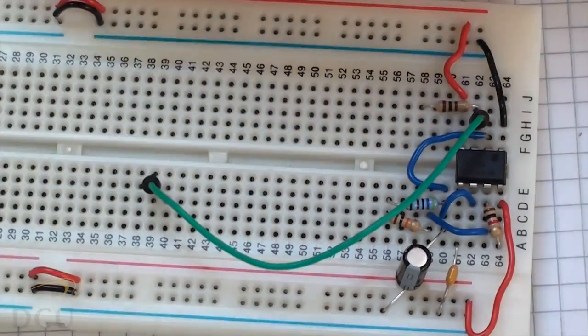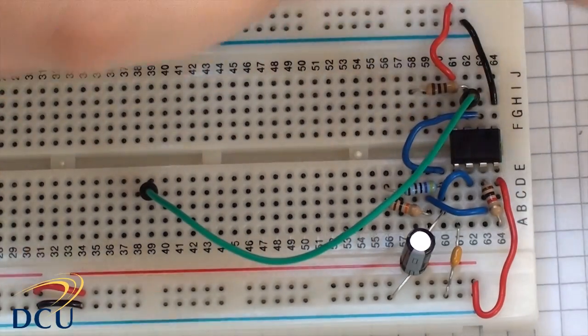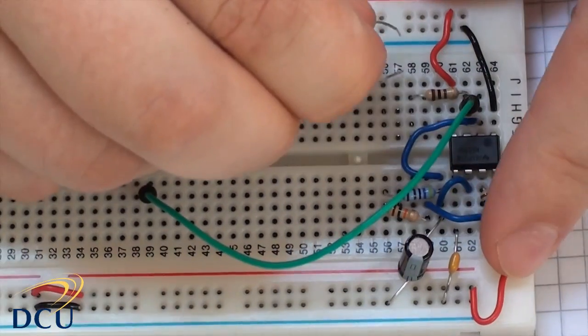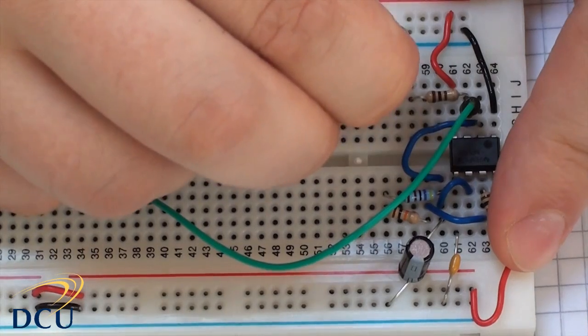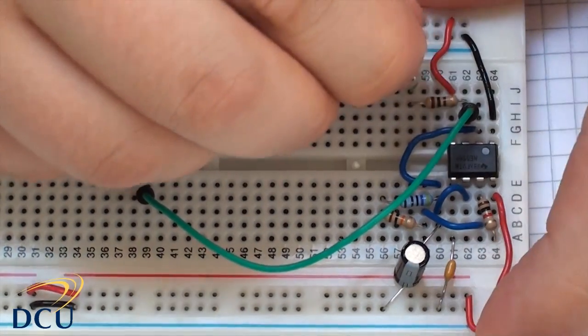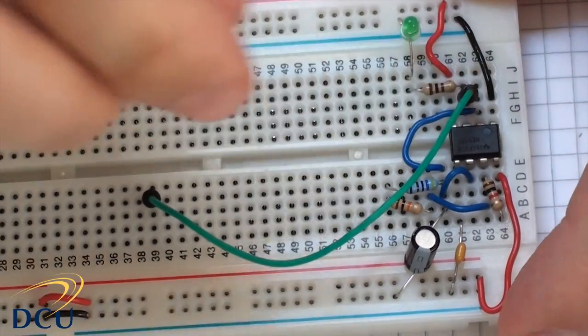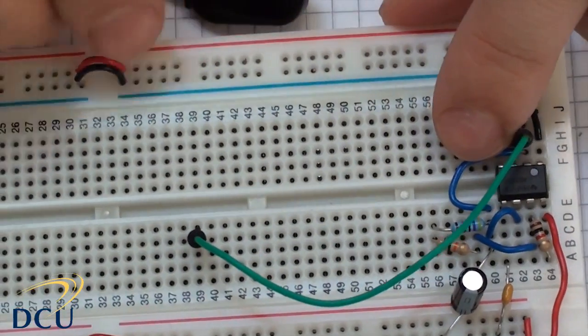And then we'll connect in our LED. And just be careful. The longer leg is the positive leg. So we want the positive leg to go between there and connect to that resistor. And the other leg to go, the negative leg, to go to ground. So we have a little LED connected.